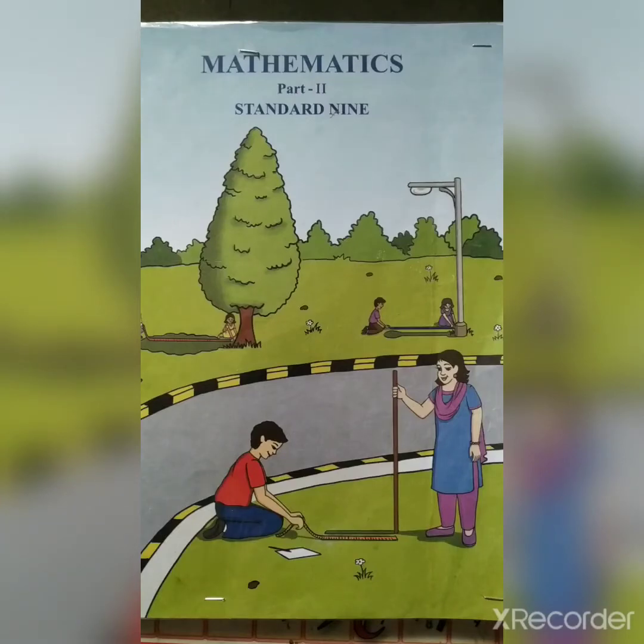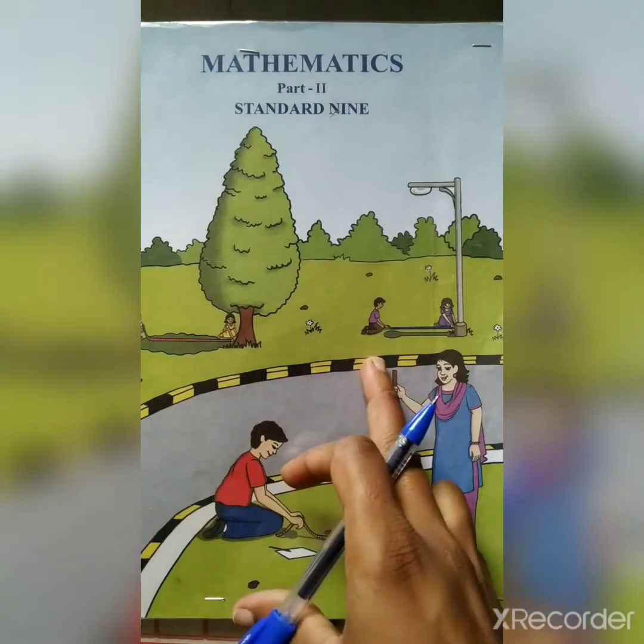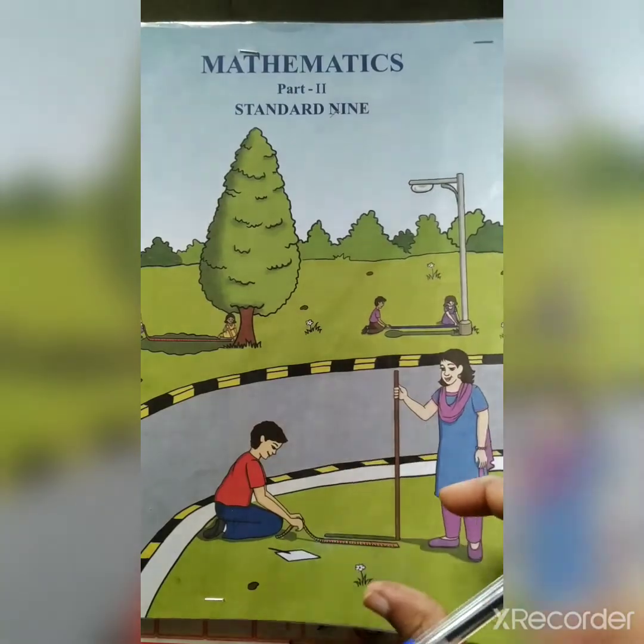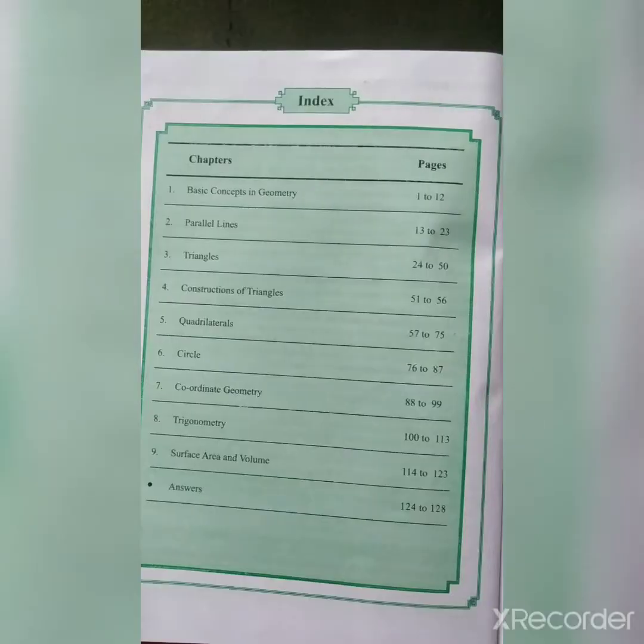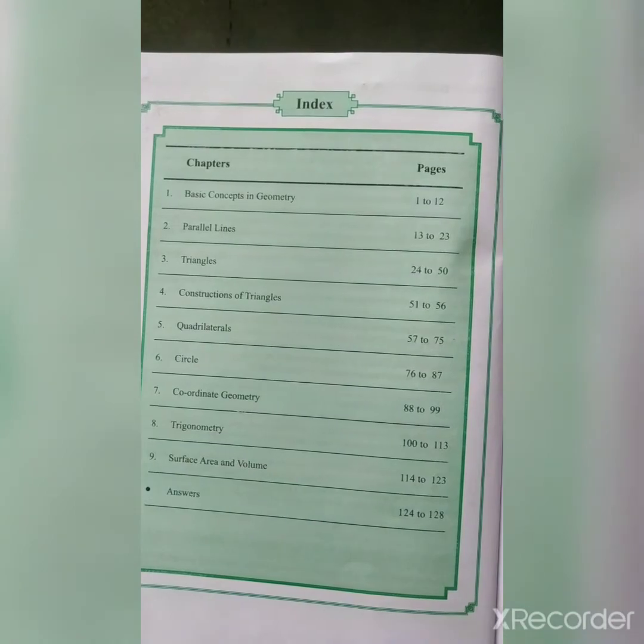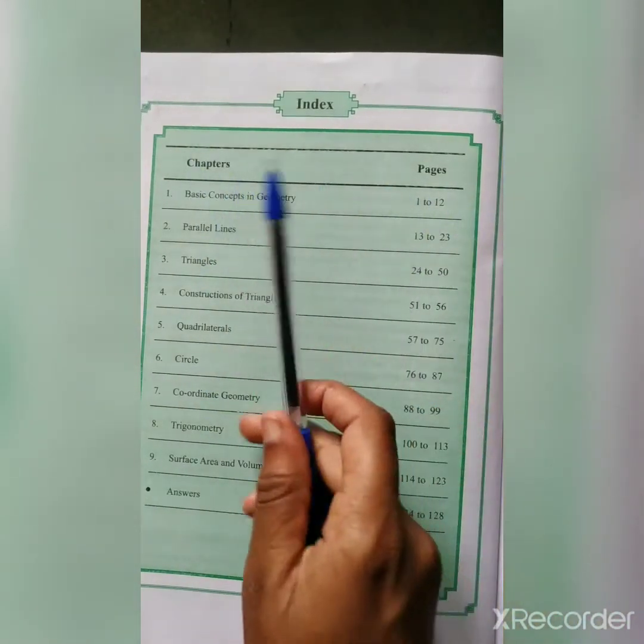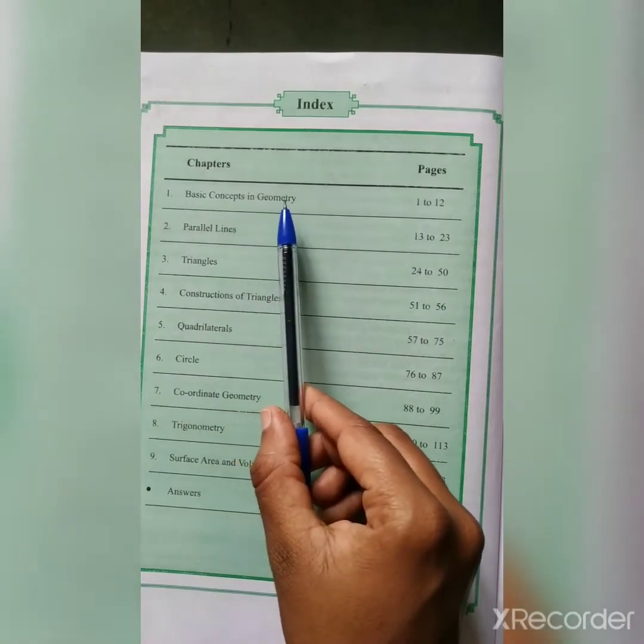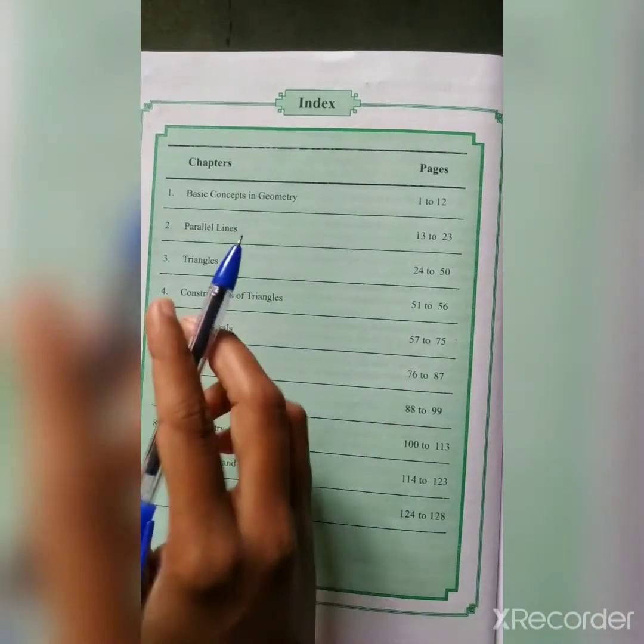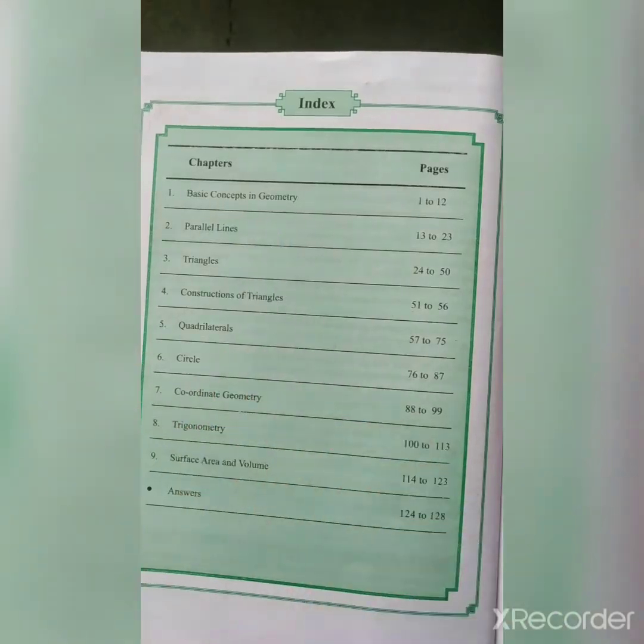Hello dear students, we have completed the first lesson from Mathematics part one. Now from today onwards we are going to learn Mathematics part two for your standard. This is the textbook for Mathematics part two. In Mathematics part two, we are going to learn this much of syllabus. First chapter is basic concepts in geometry. So today we are going to start the first chapter, basic concepts in geometry.